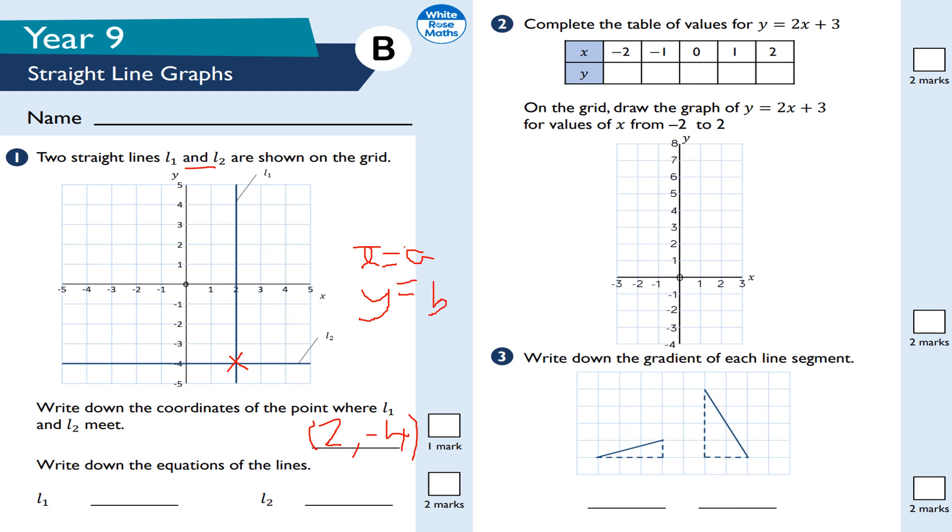So L1 is the line x equals 2. And again, if you're unsure, write down some coordinates and then see what is common in both. For the horizontal one, L2, that's y equals minus 4. And again, if you're unsure, please check here by writing down some coordinates on L2, and see what is common in both. So vertical lines are x equals a number, and horizontal lines are y equals a number.